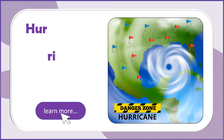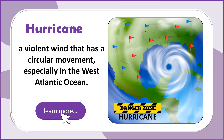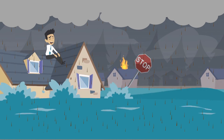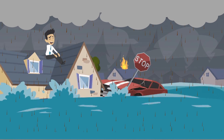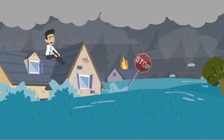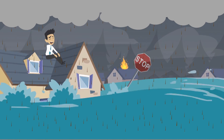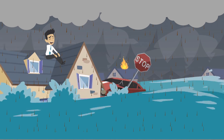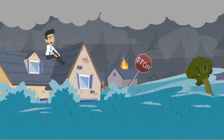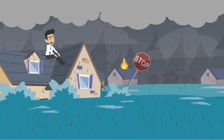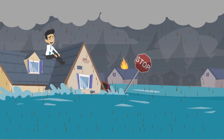Hurricane. A violent wind that has a circular movement, especially in the West Atlantic Ocean. On land, the strong winds and rain can damage properties, destroy vehicles, buildings, and bridges. It can be very destructive.